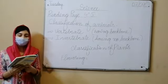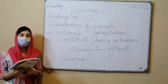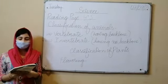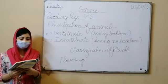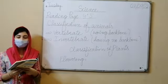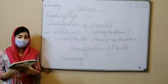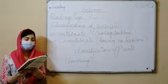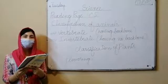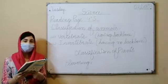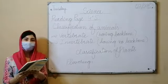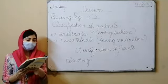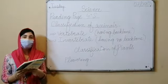Plants on which flowers grow are called flowering plants. Mustard, sunflower, rose, guava, and lemon are examples of flowering plants.